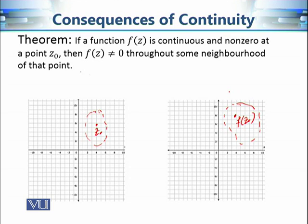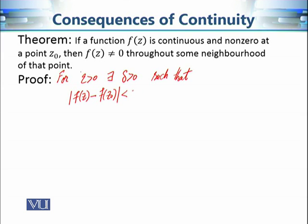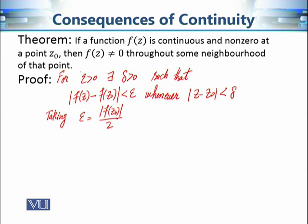The proof is very simple but the consequences are very important. It tells us the effect of continuity on the behavior of complex valued functions. Since f(z) is continuous at z₀, it must satisfy the epsilon-delta definition. The main trick of the proof is taking epsilon to be |f(z₀)| / 2. For epsilon greater than zero there exists delta greater than zero such that |f(z) - f(z₀)| < epsilon, whenever |z - z₀| < delta.